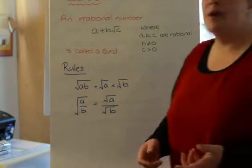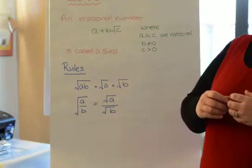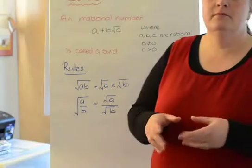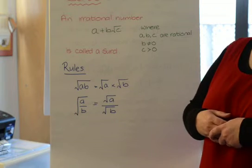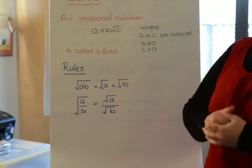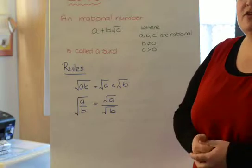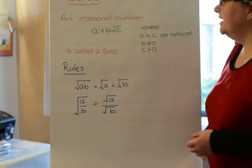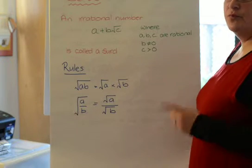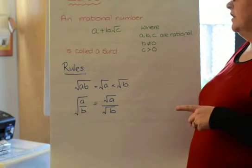And what I mean by a rational number is it can be written as a fraction. So, for example, one half is a rational number. Root two is not a rational number because it cannot be written as a fraction. And if you remember, ask me and I will prove to you that root two is irrational in class.